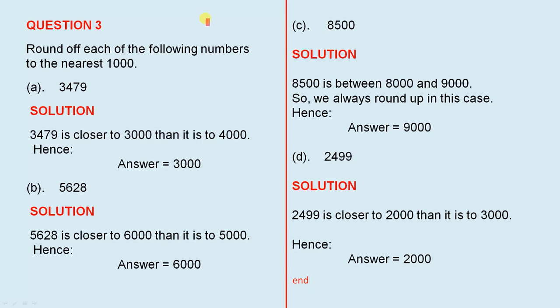Question 3: Round off each of the following numbers to the nearest 1000. What that means is that in the answer you've got to have at least three zeros at the end. 3479 is closer to 3000 than it is to 4000. So 3479 rounded off to the nearest 1000 is 3000.